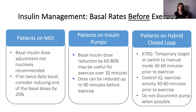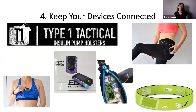For the Medtronic 670G pump, if possible, 30 to 60 minutes before exercise, set a temporary target so your glucose level being targeted is a little bit higher. For the Tandem Control IQ, start the exercise activity mode 30 to 60 minutes before you exercise. We also suggest that you do not disconnect your pump.